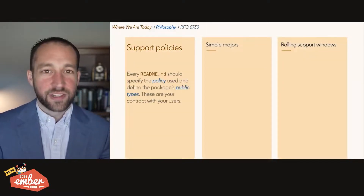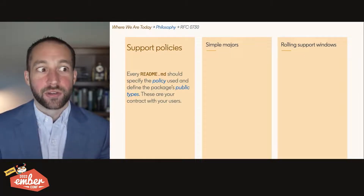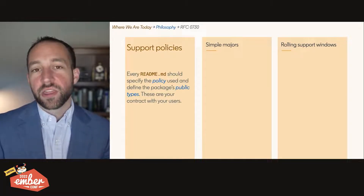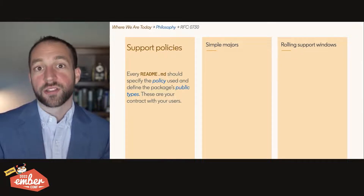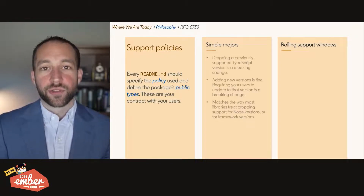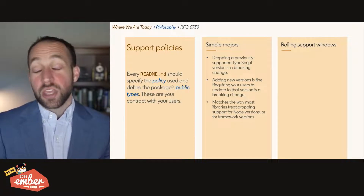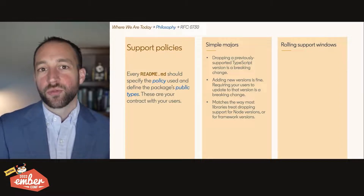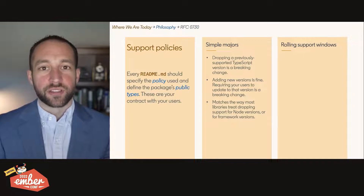We came up with some rules about how to think about breaking changes — this comes back to the old good advice about API design: be generous in what you accept, and conservative in what you provide. Those support policies: everyone needs to specify what policy they're using, what TypeScript versions they support, and what constitutes their public API, because those are the things that have to not break. There are two broad options: the simple majors policy and the rolling support window policy. Simple majors is simple: if you drop support for an existing TypeScript version, that's a breaking change for your library. This matches ecosystem norms around things like Node.